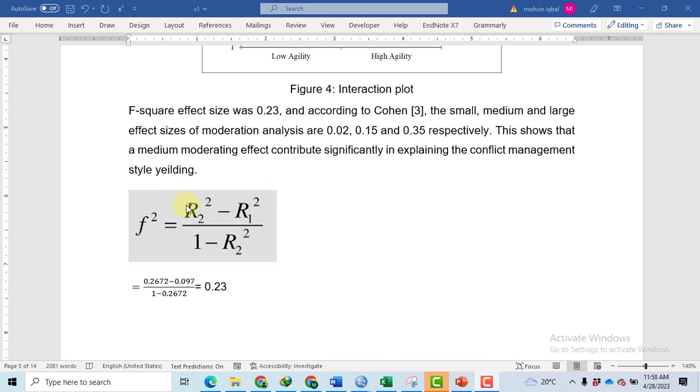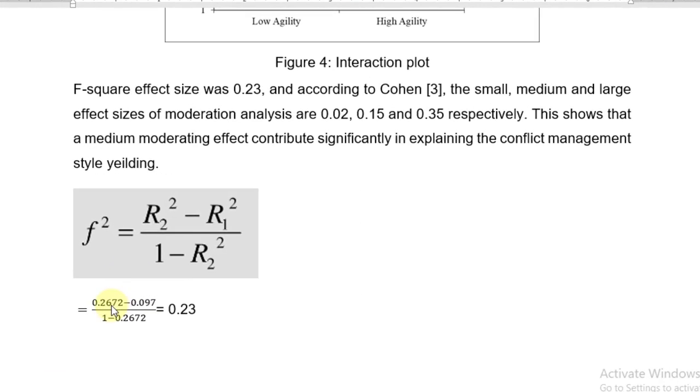I got 0.2672 as R² square, the variance explained by the moderation analysis, and 0.097 as R¹ square. I got this value from the regression analysis.